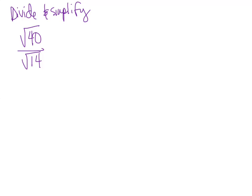Divide and simplify. We have the square root of 40 divided by the square root of 14. When I have two radicals that are being divided, I always look to see if they have any factors in common, and in this case they do.